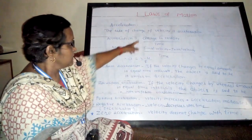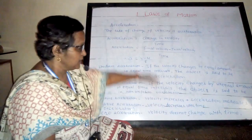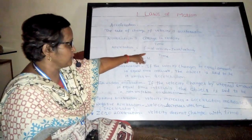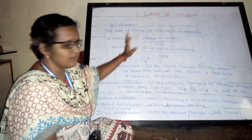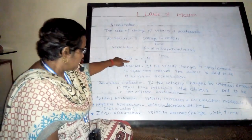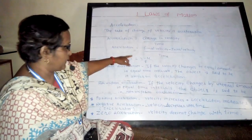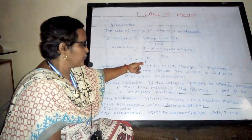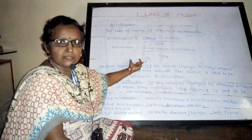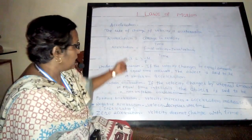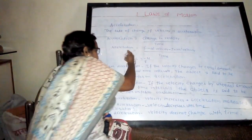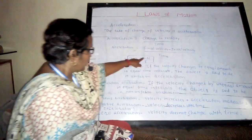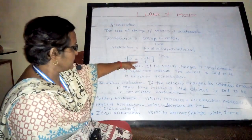Change in velocity is calculated by subtracting initial velocity from final velocity. The symbol for acceleration is A. V is written for final velocity, U is written for initial velocity, and T is time. So the formula is: A = (V − U) / T. You have to remember this formula to solve numerical problems.